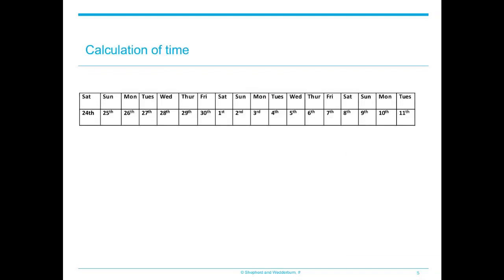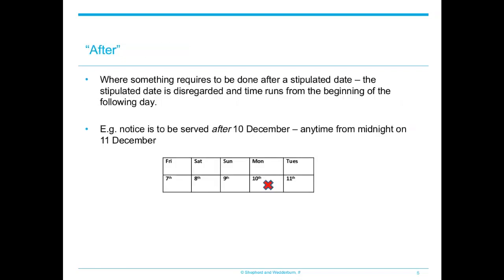It's essential to establish precisely at what point the period commences and when it terminates. So we're going to use a worked example, assuming the relevant date is Monday the 10th of December 2018. Quite often a lease will stipulate something has to be done after a certain date — so after the 10th of December. In that situation, the 10th of December is disregarded and the time runs from the beginning of the following day. After 10th December essentially means from midnight, the point when the 10th becomes the 11th.